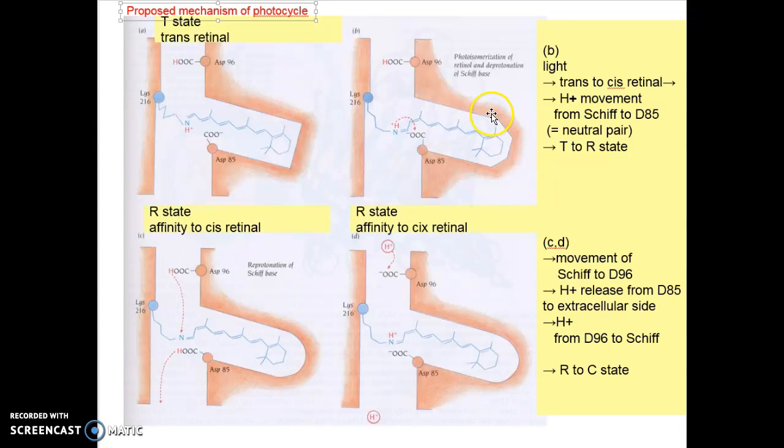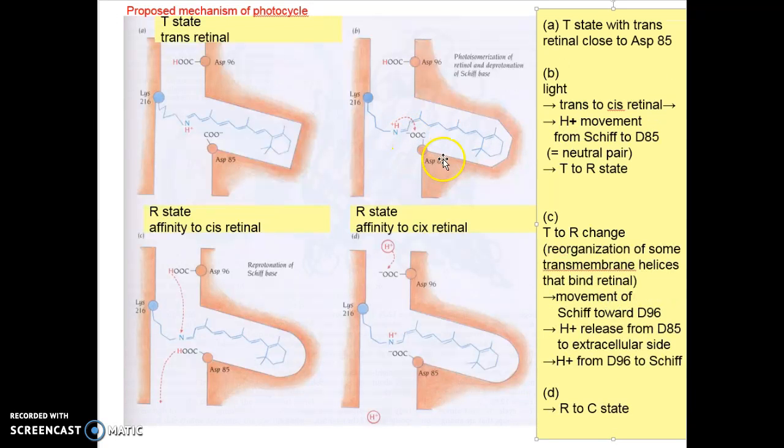This induces transfer of the Schiff base proton to the acetyl group. The resulting structure will be a neutral pair instead of positive-negative charge. Such neutral pair changes protein structure from T to R.